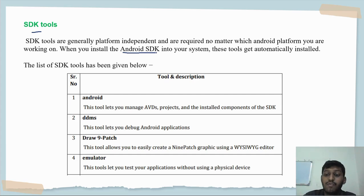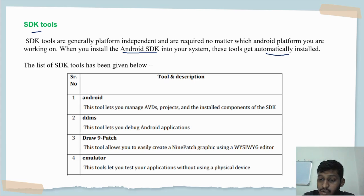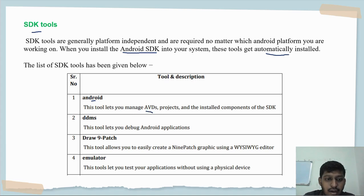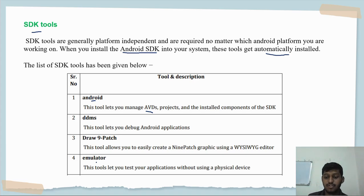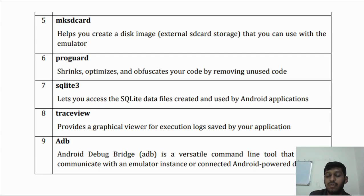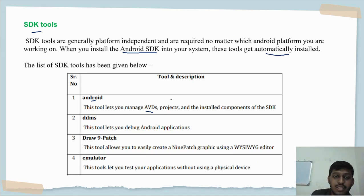Android SDK stands for Software Development Kit. It contains all the tools required for application development. One of the tools in the kit is Android Studio. When you install the Android SDK, these tools get automatically installed in your system. Android tool manages Android Virtual Devices (emulator), and draw nine-patch graphics. These tools are already installed when you install the Android SDK.